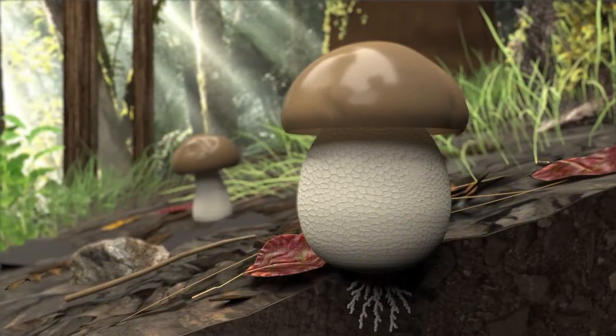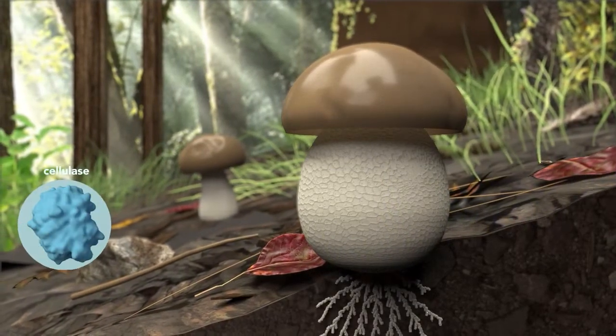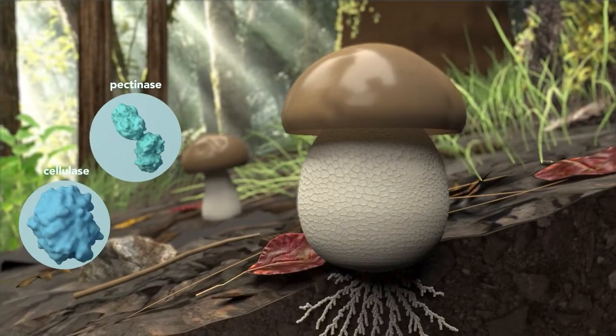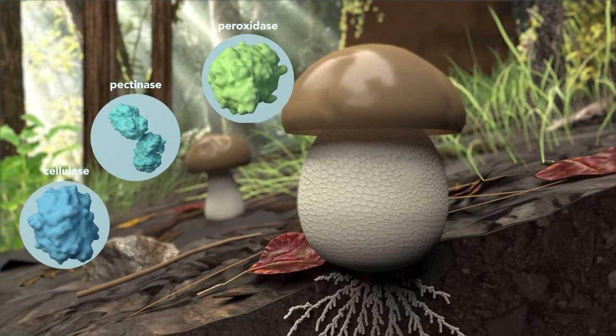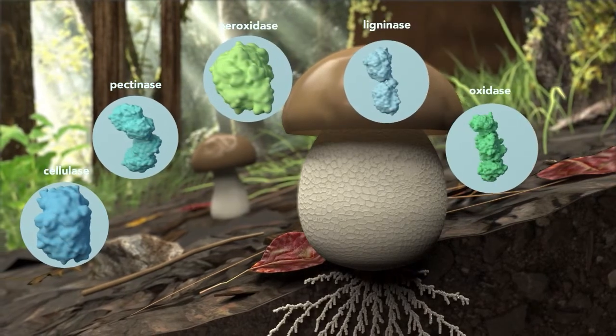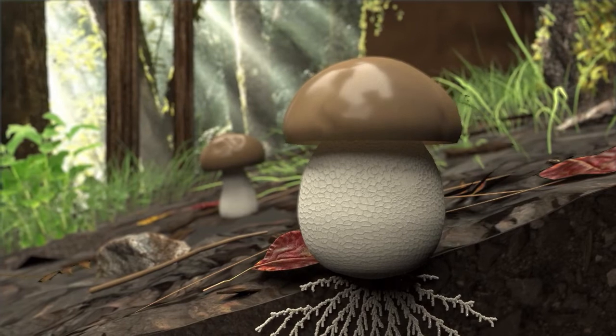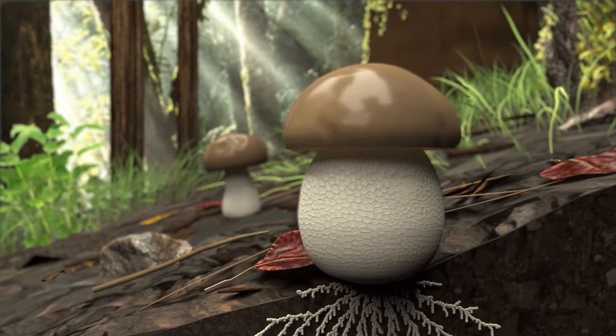The fungal hyphae secrete enzymes like cellulases, pectinases, peroxidases, ligninases, oxidases, and xylanases, breaking down the substrate where they grow.